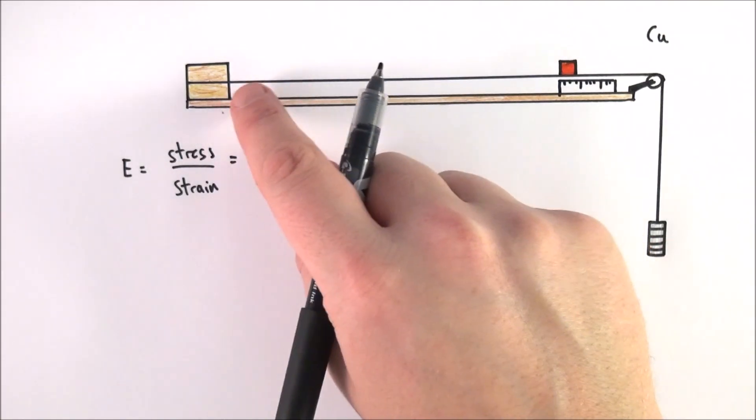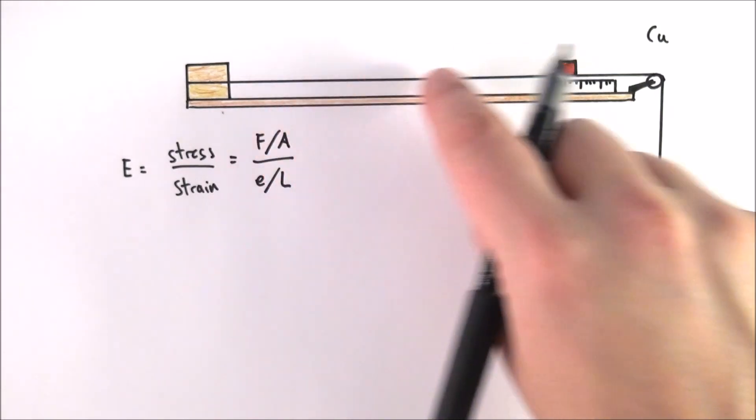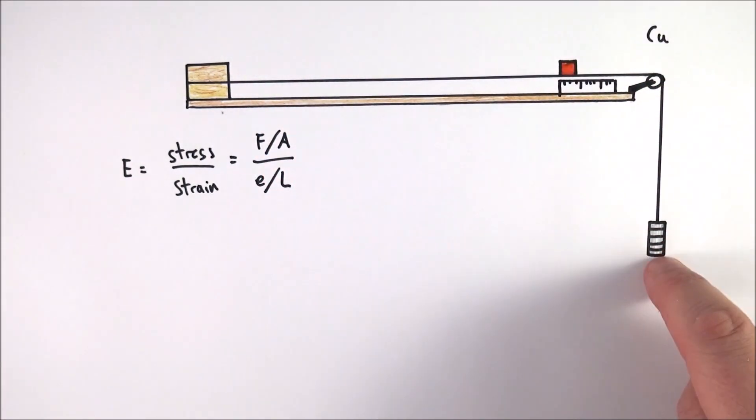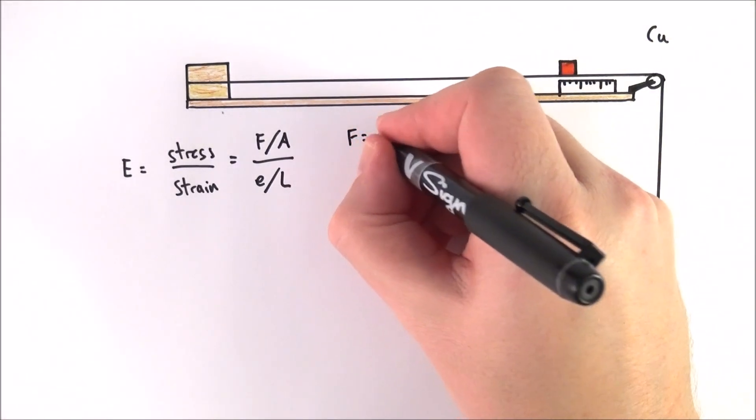What's the force that this copper wire is being put under? Well the force is provided by the tension which is caused by the masses on the end down here. And they've got a weight acting down which is equal to mg. So that means then that the force is equal to mg.